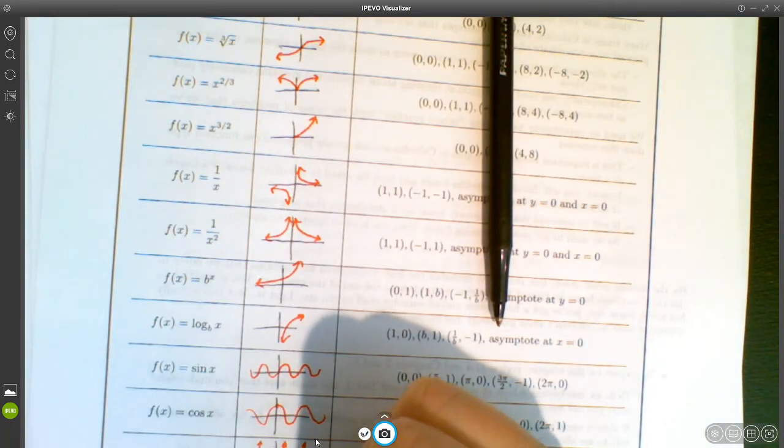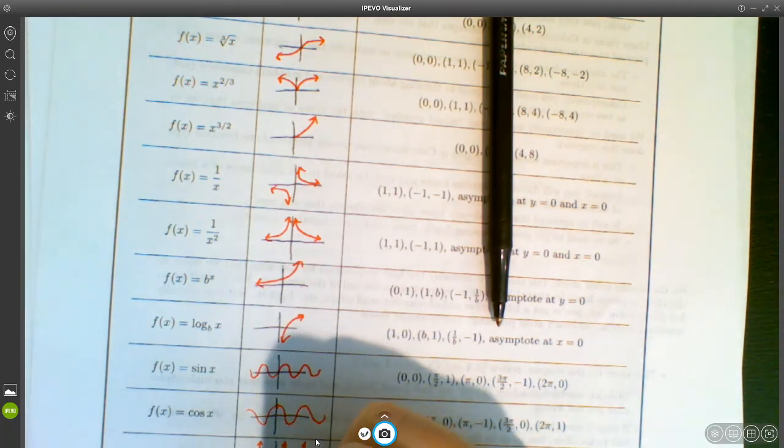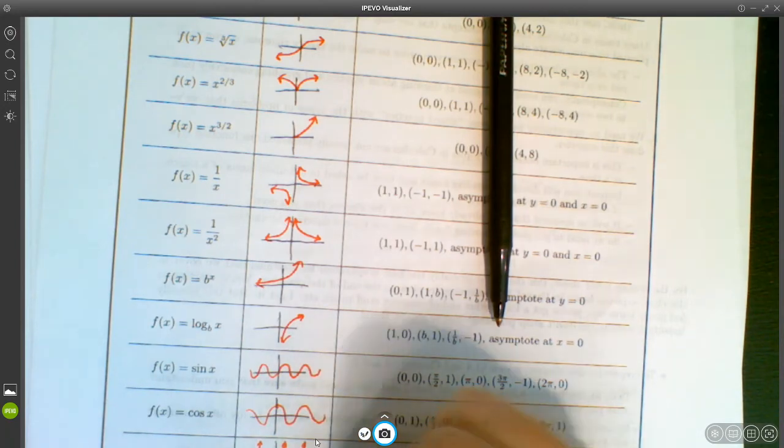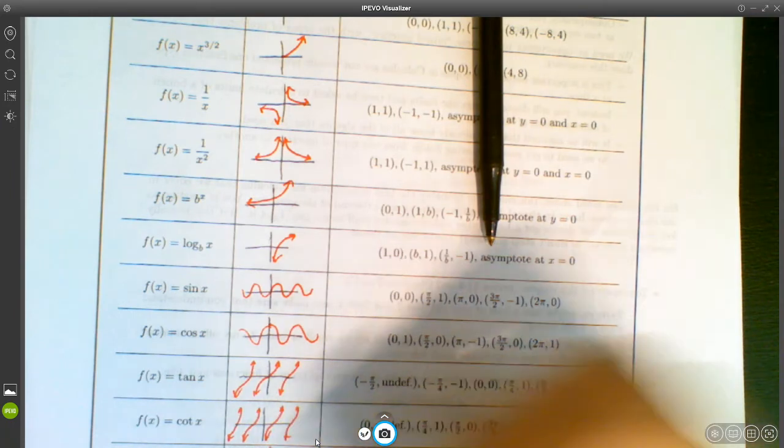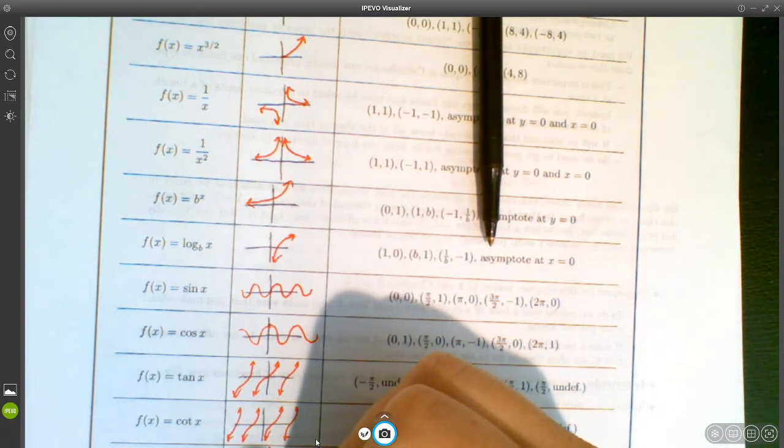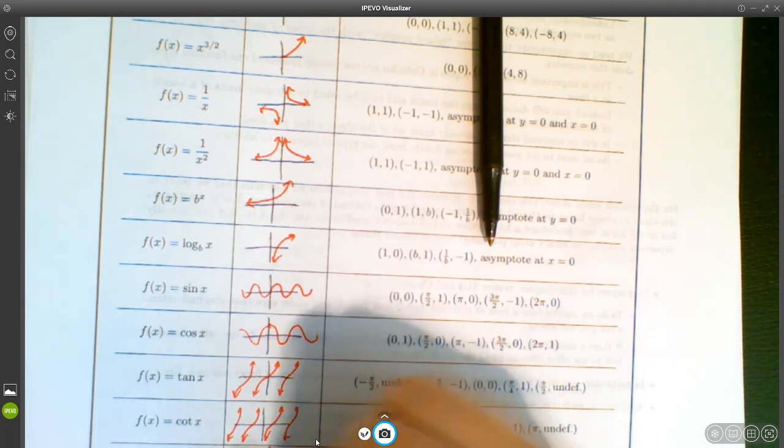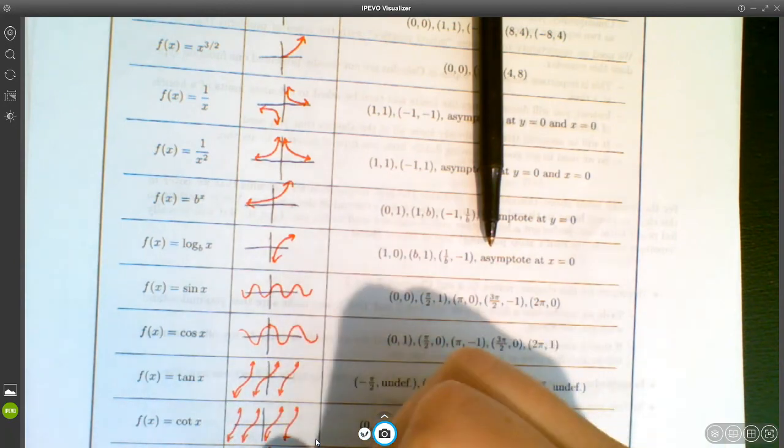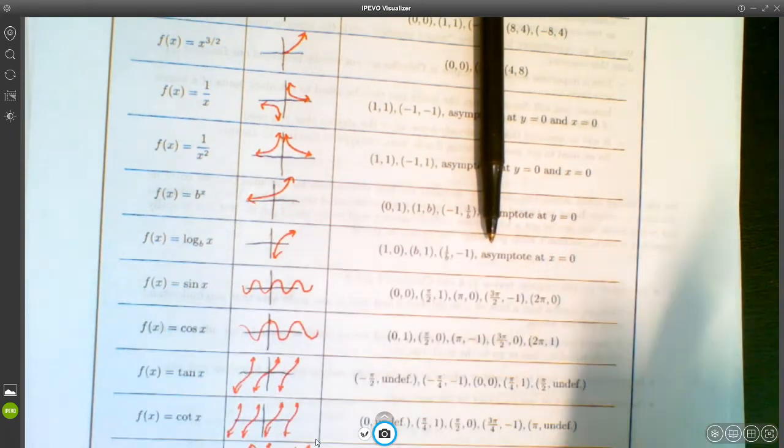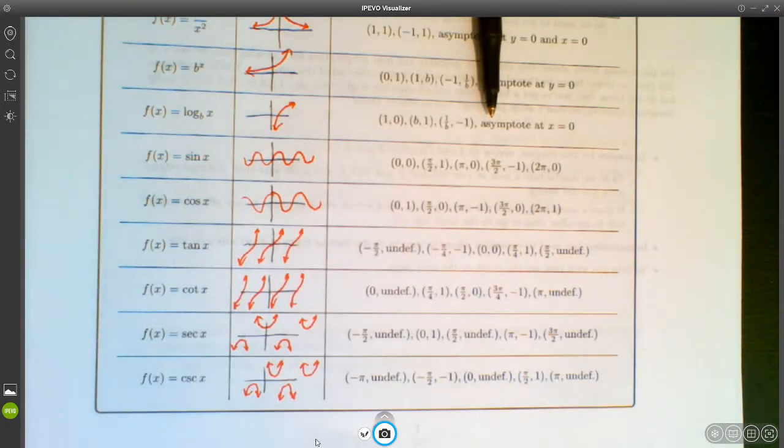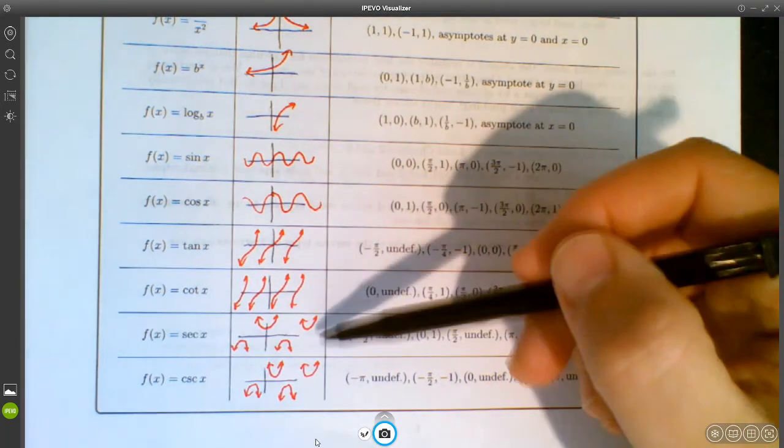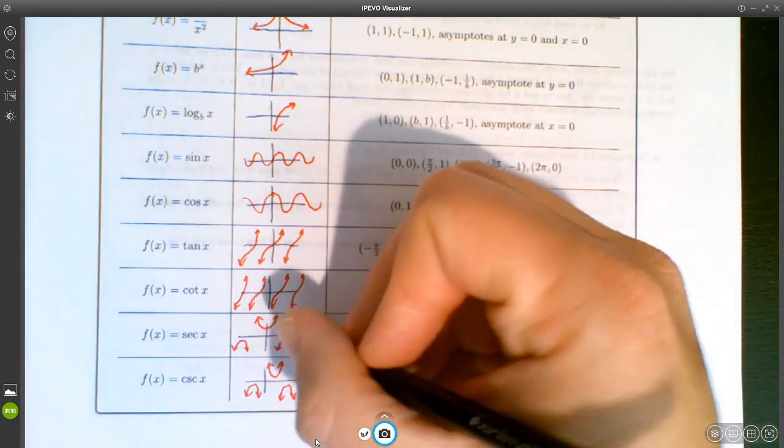Secant looks like this. And this thing, of course, keeps repeating on and on. And then cosecant looks like this. Wait a second, which way does it open? It opens up here. Yes, it opens up here. Down there. I had to think about that one for a second. But I should take my own advice and do some more memorization. But anyway, secant and cosecant.